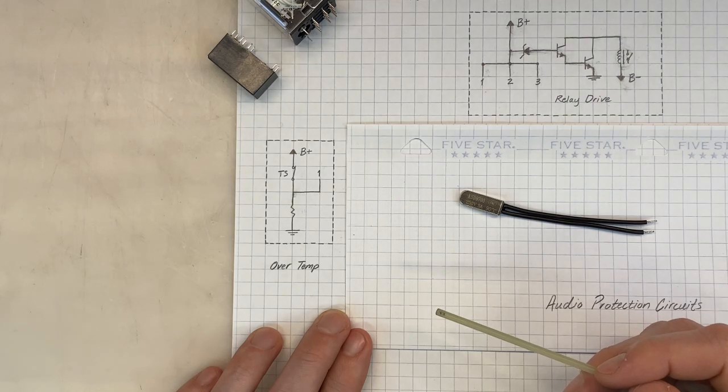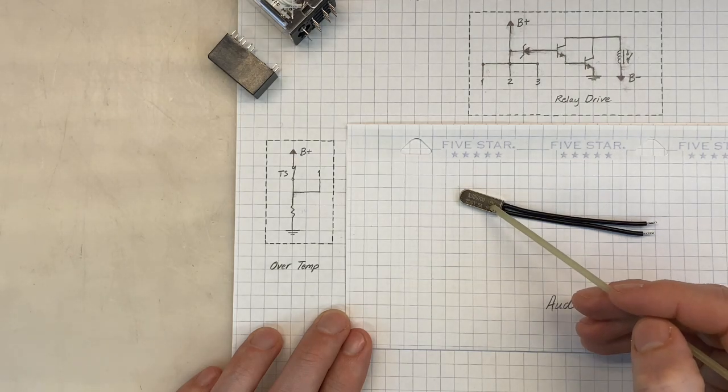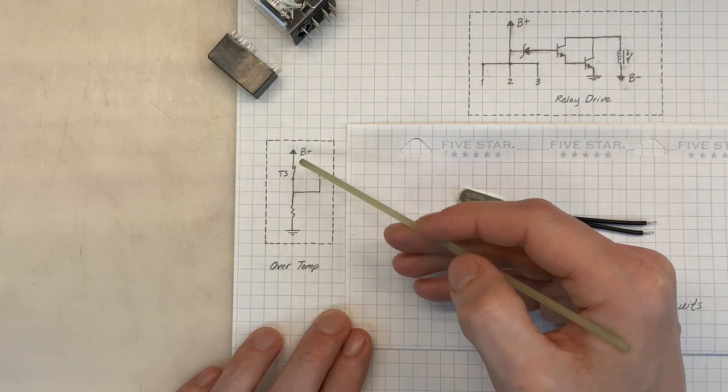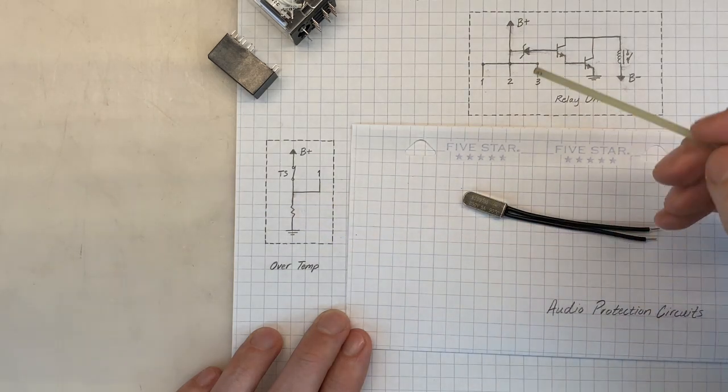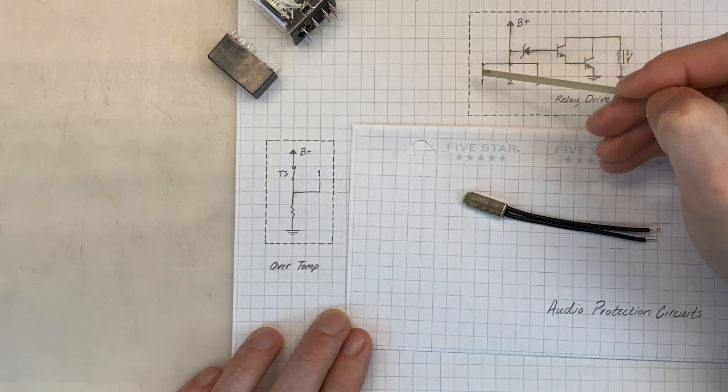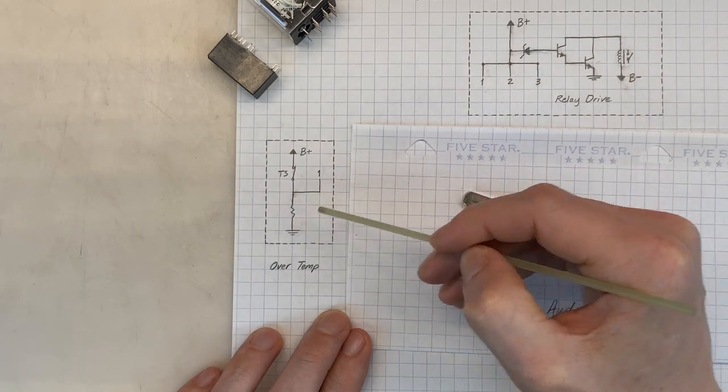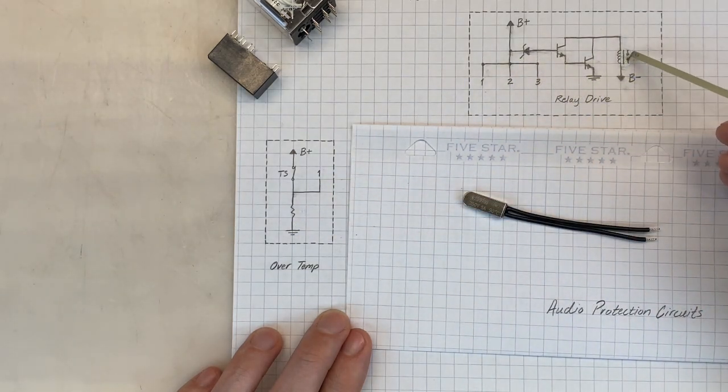But when the temperature of the heat sink is too high, higher than the limit of the switch, the switch will open. We no longer have B-plus sitting at this node, but we have ground. So now we have a path from B-plus through node 1 to ground. That will bypass our relay drive circuit.